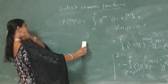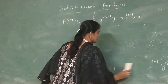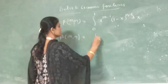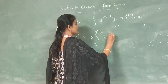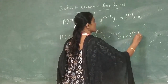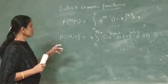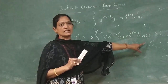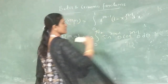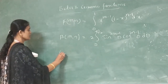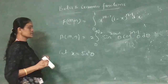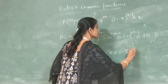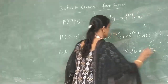We have one more property of beta function. That is, beta(m, n) equals 2 times the integral from 0 to pi by 2 of sin to the power of 2m minus 1 theta, into cos to the power of 2n minus 1 theta d theta. Every property is proved from the beta definition only. This is the definition of beta function. Let x equal to sin squared theta. Then 1 minus x equals 1 minus sin squared theta, which is nothing but cos squared theta.